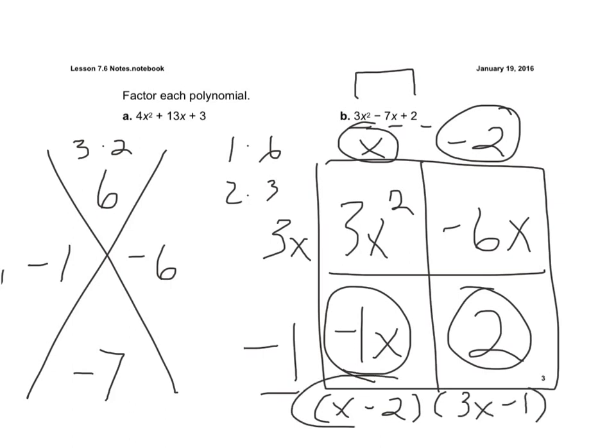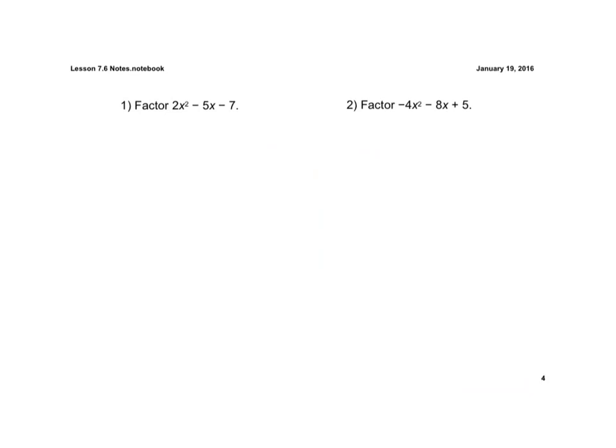And again, these are the two binomials that multiply together that equal that quadratic binomial. And if you want to take a look at these, you can. We've already done a couple of examples. So if you want to pause it and try this out, and then I'll just reveal the answer here in just a moment.